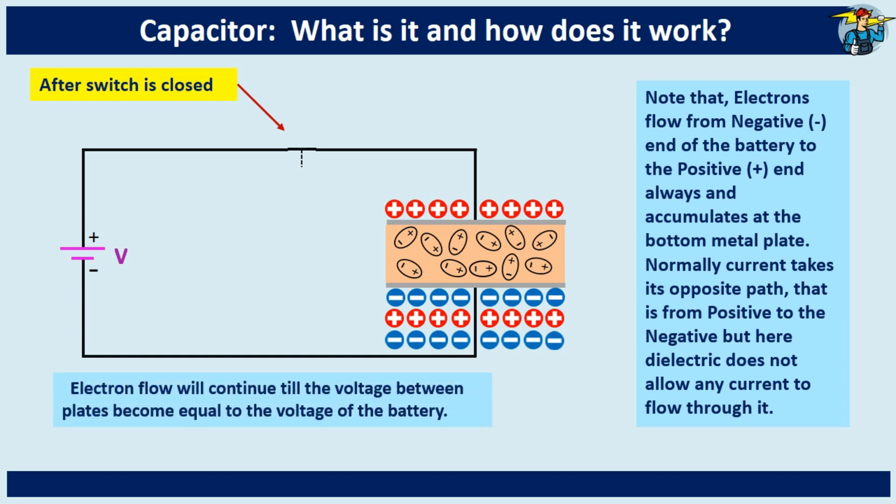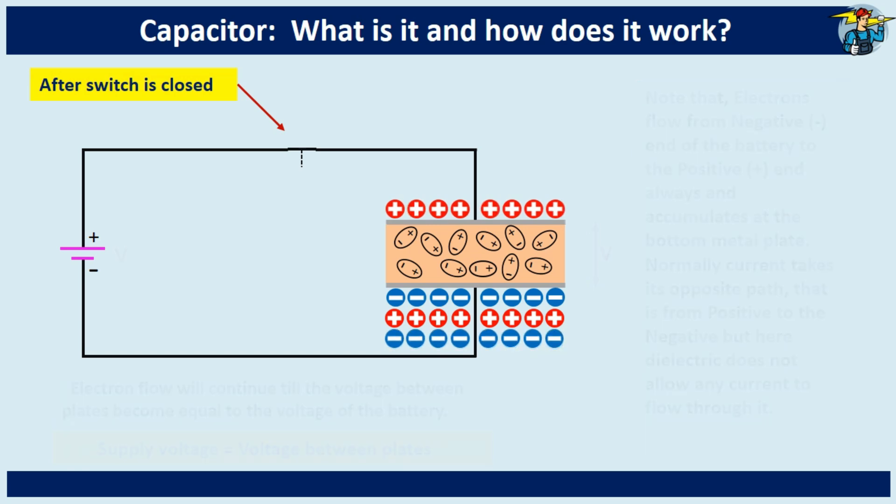The flow of electrons will continue until the voltage between the plates equals the voltage difference of the battery. Since the neutralized molecules do not affect the charge of the plates, they can be removed now.